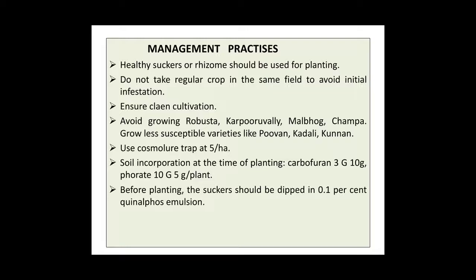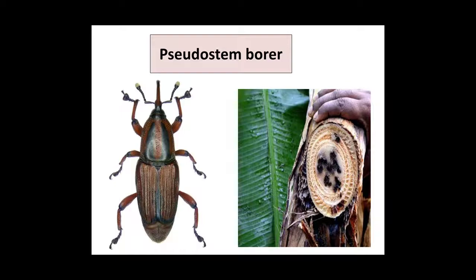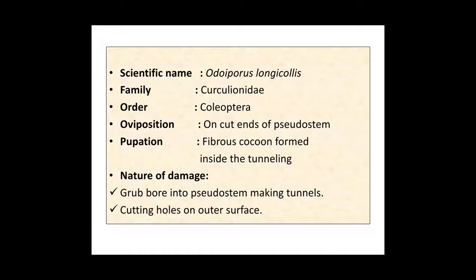The second and important pest of banana is Pseudostem Borer. The scientific name is Odoiporus longicollis. It belongs to family Curculionidae and order Coleoptera. Eggs are deposited on the cut ends of the pseudostem, and pupation takes place in a fibrous cocoon form inside the tunneling.